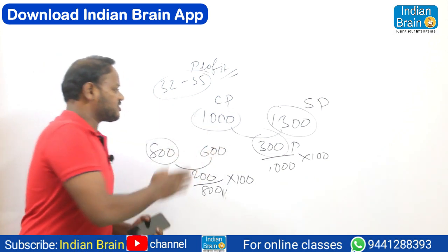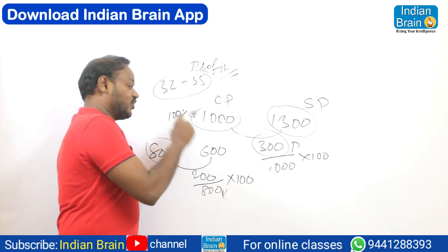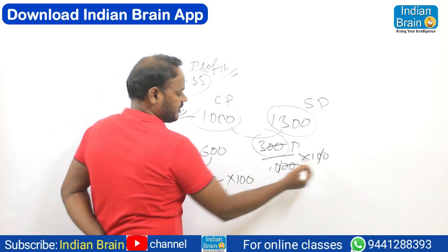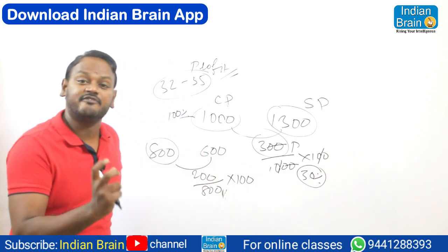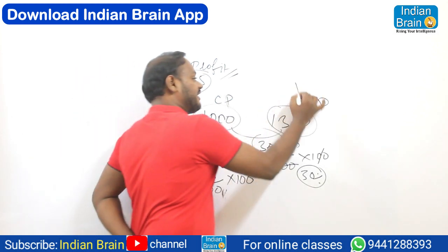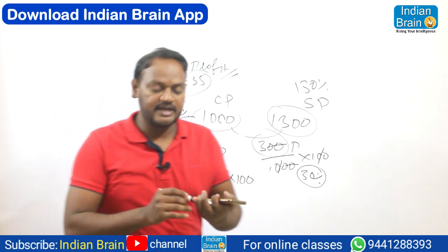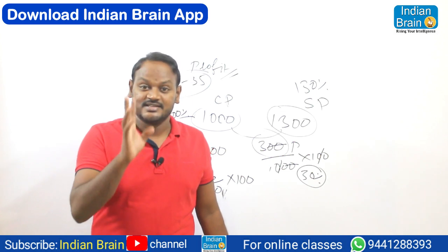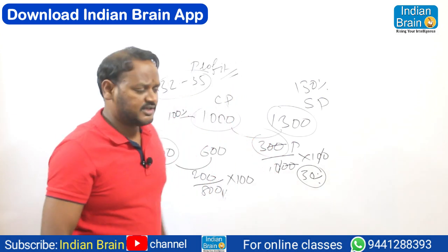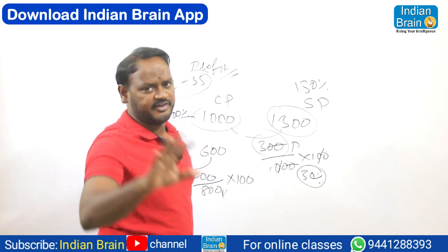Whatever the investment is — 1000, 2000, 5000, whatever — it can be taken as 100%. So the investment is 100%. If I get 30% profit, the selling price will be 130%. If I get 40% profit, the selling price will be 140%. If I get 20% loss, the selling price should be less than 100% — that is 80%. If profit, it should be over 100%; if loss, it should be below 100%.